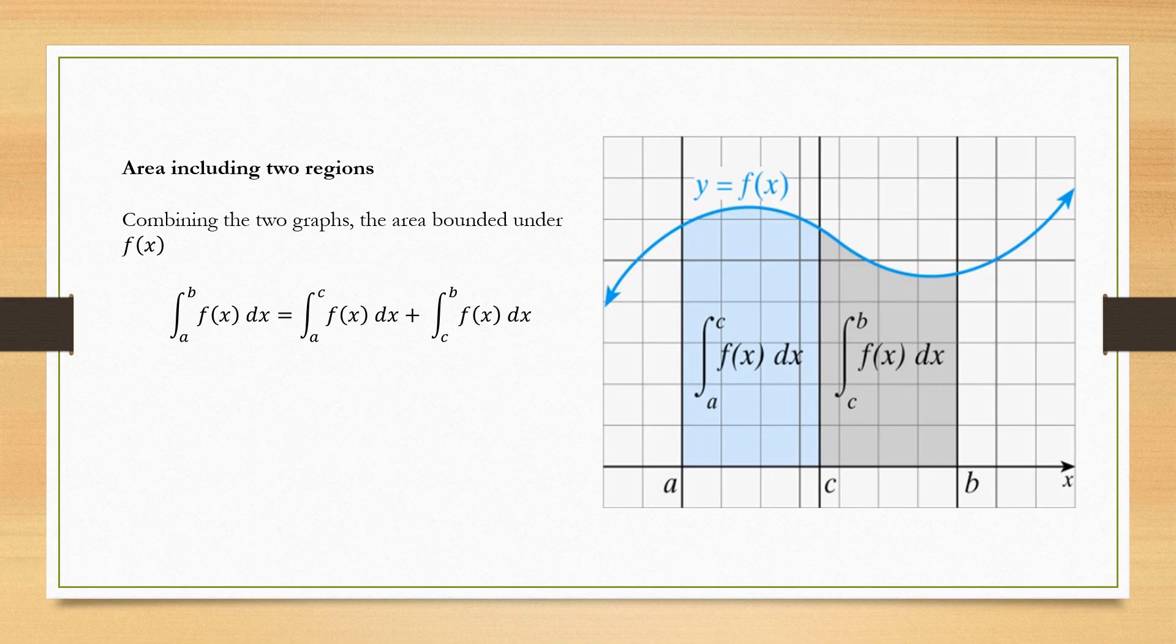So area including two regions, we just combine two graphs, the area bounded under f(x). There is a single curve but there is a division in between this particular region. So we name, we just write down the limits as a, c and b. So how am I concluding integral a to b f(x) dx is equal to the entire area from a to b will be equal to the sum of integral over a to c plus the integral sum of c to b. So hence I will be arriving at my total area adding of the two regions which is integral a to b f(x) dx.